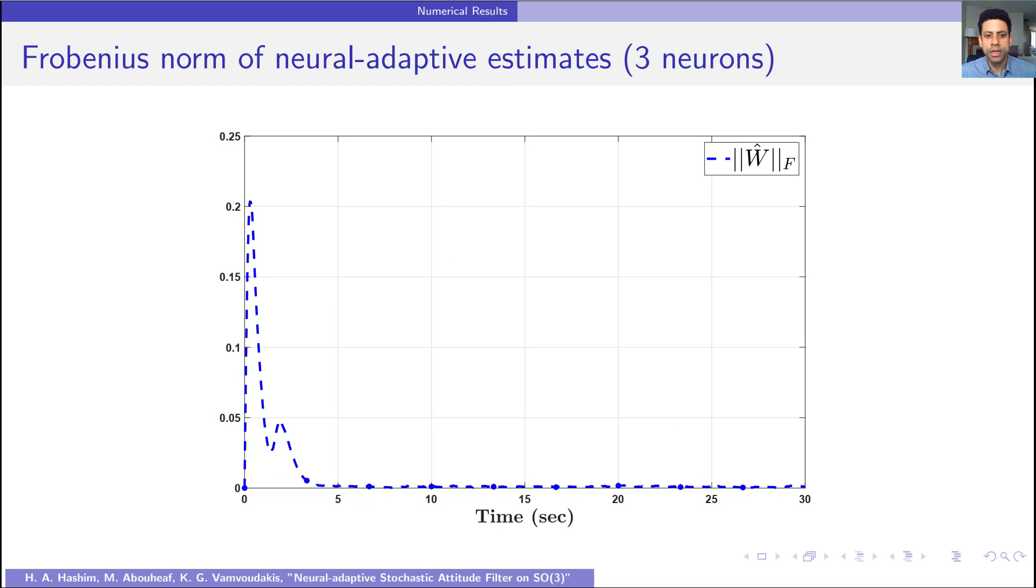Finally, this figure shows boundedness of the neural adaptive estimates. As we can see, the estimates converge very close to zero as R tilde, or as normalized Euclidean distance of attitude error, goes to zero.